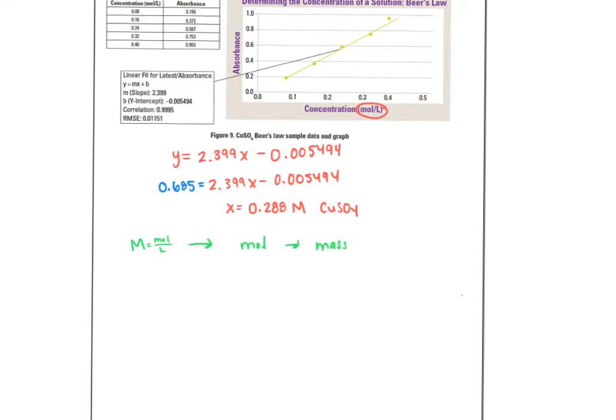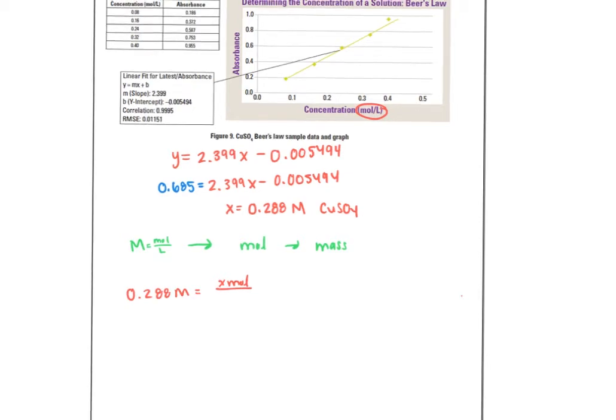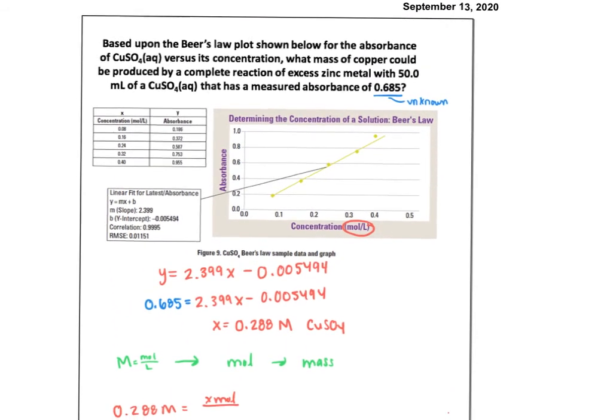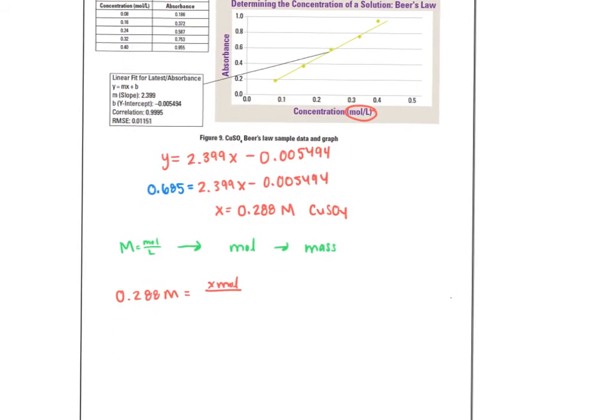So I'm going to take my molarity. 0.288 molar equals some number of moles over, and we need to know the volume. And for this problem, they told us it was 50 milliliters. So the unknown had a volume of 50 milliliters. That's 0.0500 liters. So I can solve for X. In this case, for my moles, I get 0.0144 moles of CuSO4.